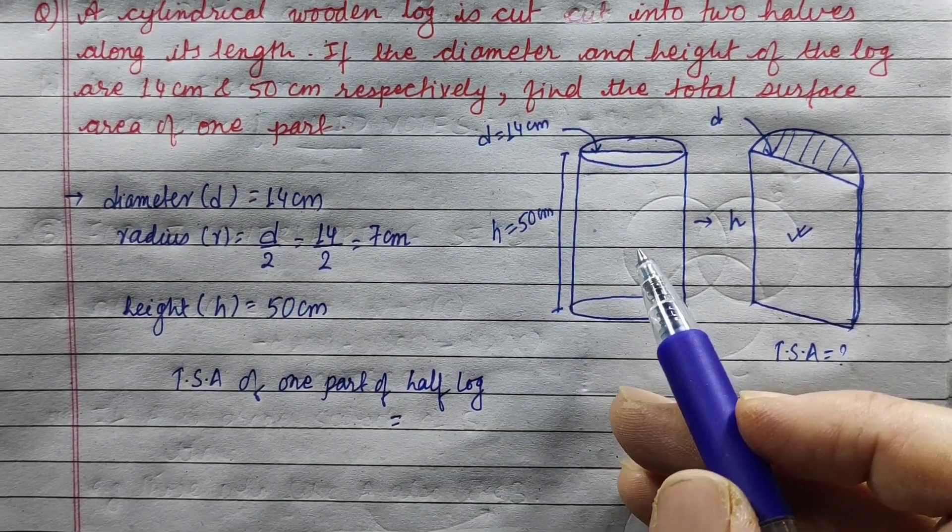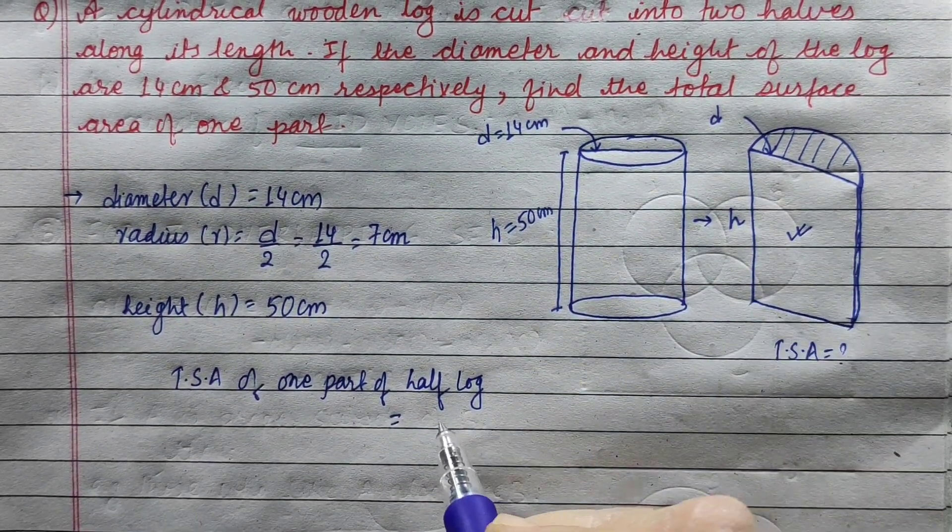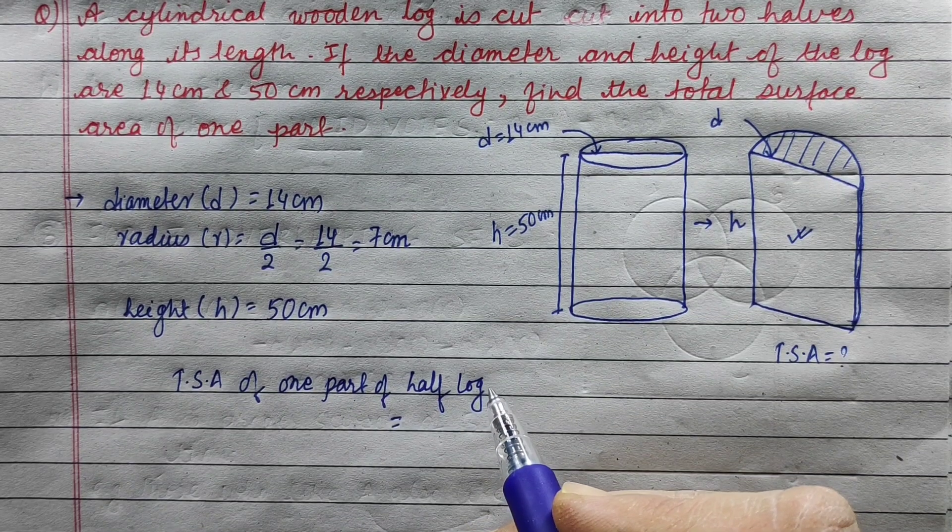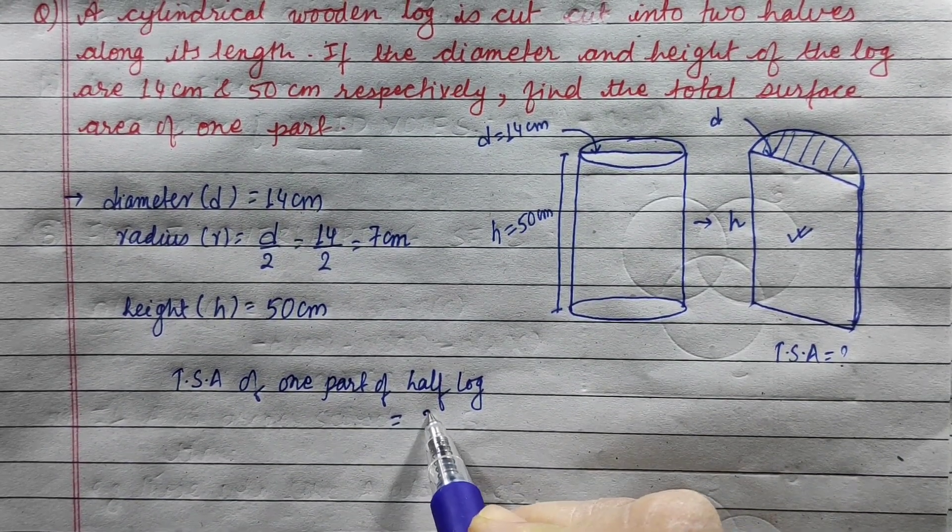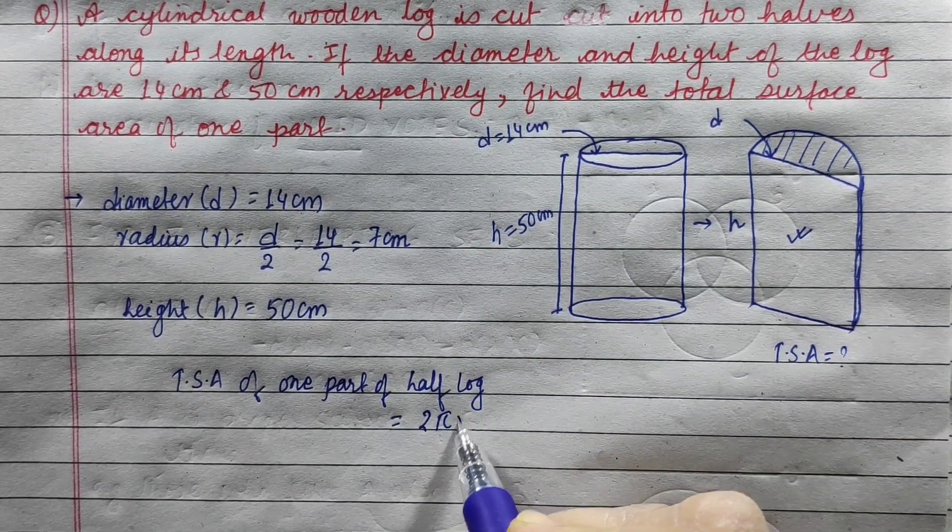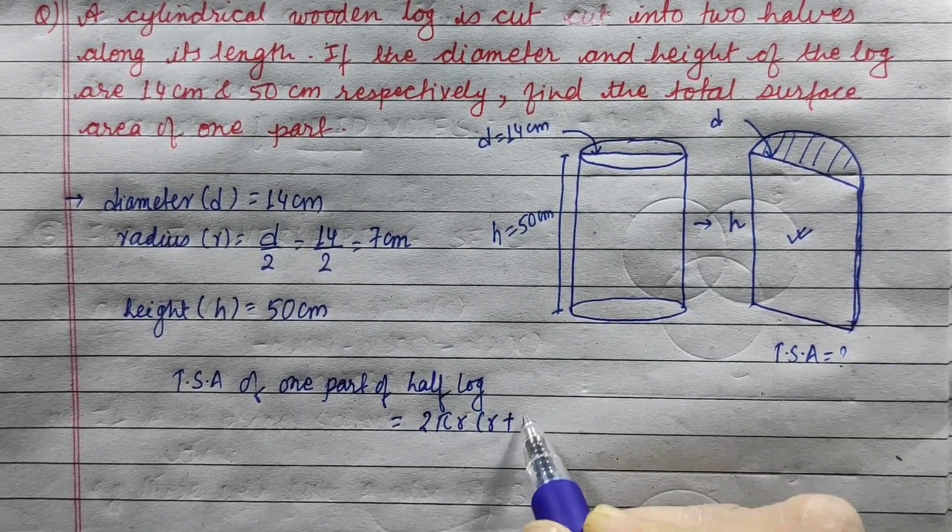The TSA of a cylinder is 2πr(r+h). Now, for half the cylinder,